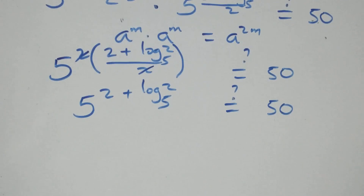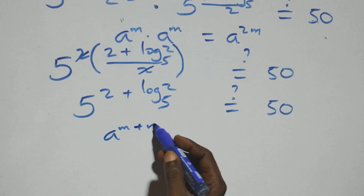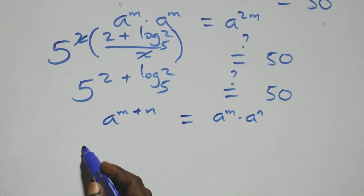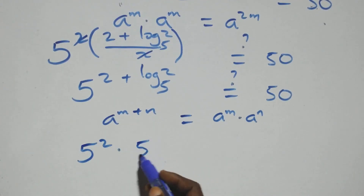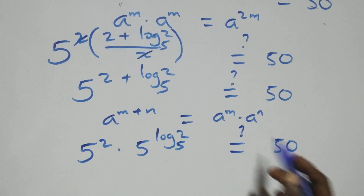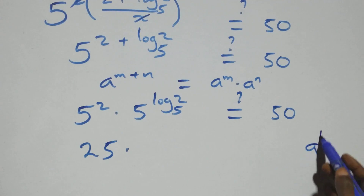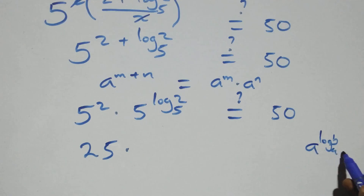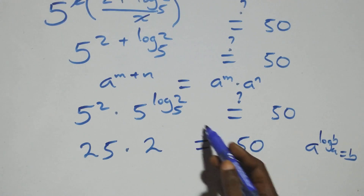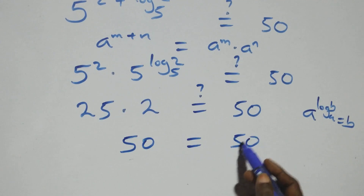We apply the law of indices: a raised to power m plus n is the same as a raised to power m times a raised to power n. So this becomes 5 squared times 5 raised to power log₅2. Now 5 squared is 25, and by the identity a raised to power log_a(b) equals b, 5 raised to power log₅2 equals 2. So we get 25 times 2, which equals 50.